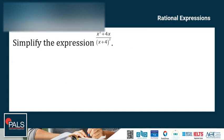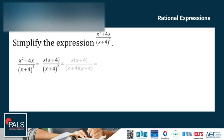Another example: simplify the expression x squared plus 4x, all over x plus 4 squared. Factor out both the numerator and denominator. Factoring them out we have x times x plus 4, all over x plus 4 times x plus 4. Then canceling the common factor, the final answer is x over x plus 4.